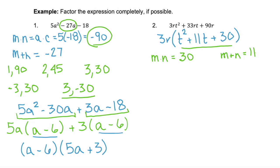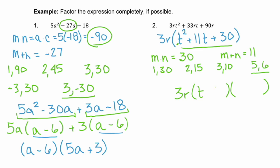Factors of 30 that add to 11: 1 and 30 — no. 2 and 15 — that's 17, no. 3 and 10 — that adds to 13, getting closer. How about 5 and 6? Those multiply to 30 and add to 11. Since we don't have a leading coefficient here, these two factors are directly the factors of our binomials. So we have 3R, our GCF, times (T plus 5)(T plus 6).